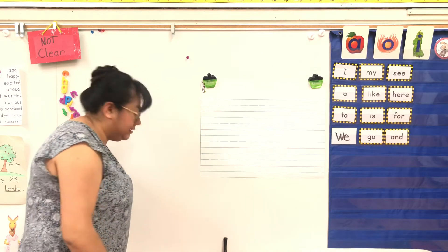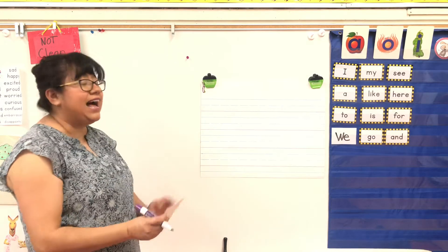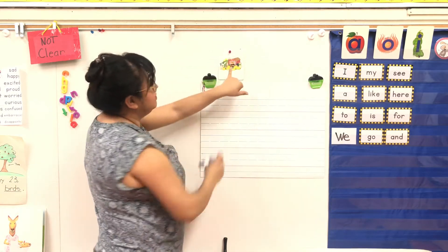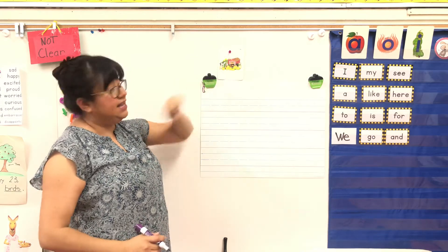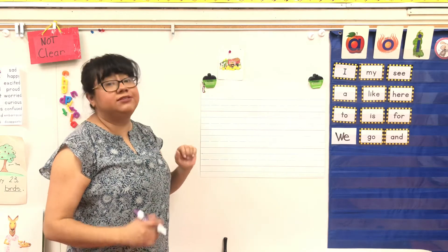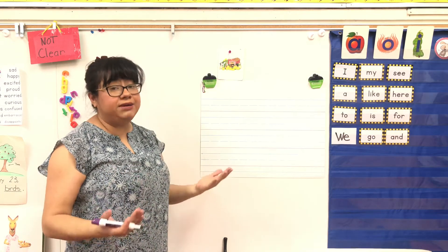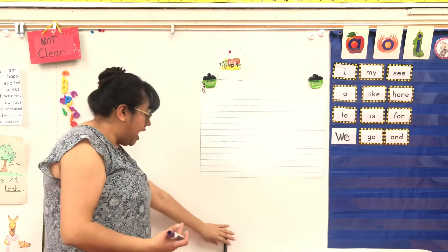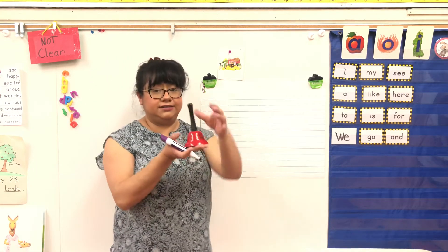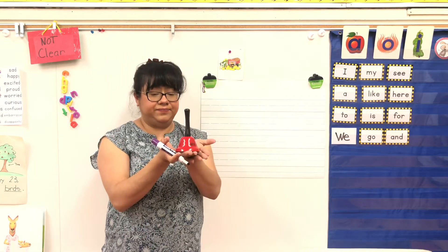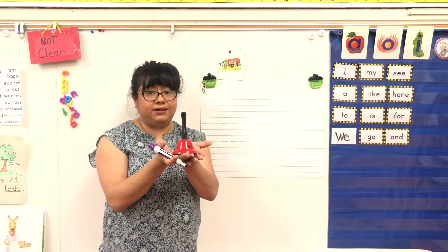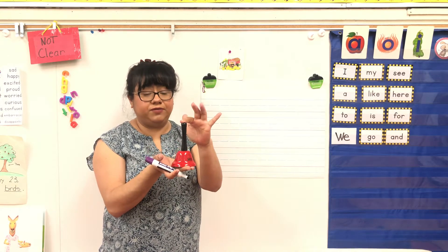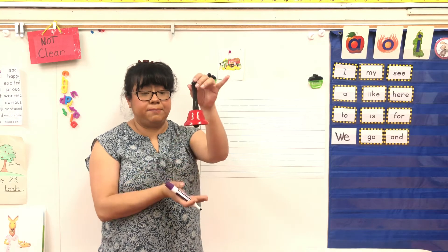Okay, what else is a noun? A place is a noun. What place is this? Yes, that's a farm. So a farm is also a noun, a place. And things — what is this? This is a bell. So the naming word, or the noun word for this, is a bell.